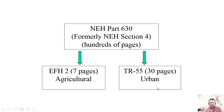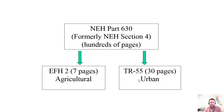TR-55 and EFH2 are both derived from the National Engineering Handbook, Part 630 — an NRCS publication that's hundreds of pages. EFH2 is for agricultural lands and is only seven pages; download it from the NRCS website or from the attachment to this lecture. TR-55 is also a good resource — the pen-and-paper version of TR-20. The TR-55 manual goes through the steps and how each equation is derived and how to use it, and it's also attached to this lecture.